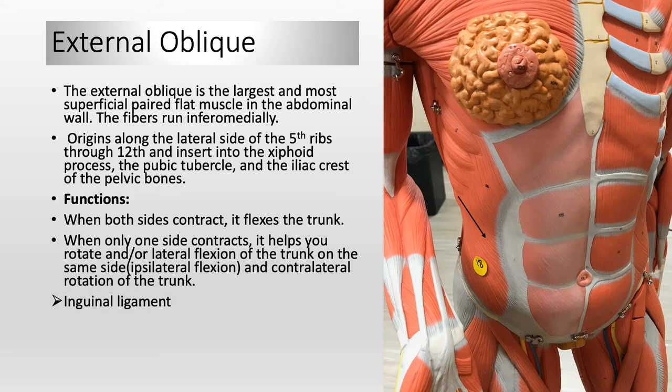The inguinal ligament is a structure formed by the inferior border of the external oblique muscle. It runs from the anterior superior iliac spine of the ilium to the pubic tubercle of the pubic bone. Halfway between the anterior superior iliac spine and pubic symphysis is the landmark for the femoral artery, so we use the inguinal ligament as a landmark to locate the femoral artery. I will show the inguinal ligament labeled in upcoming pictures.